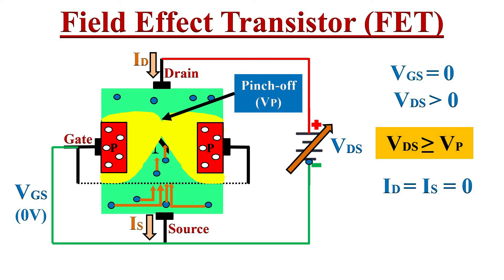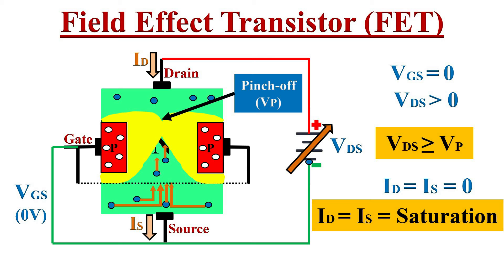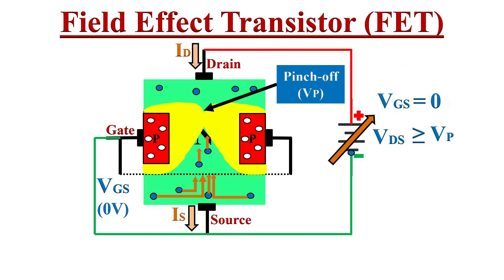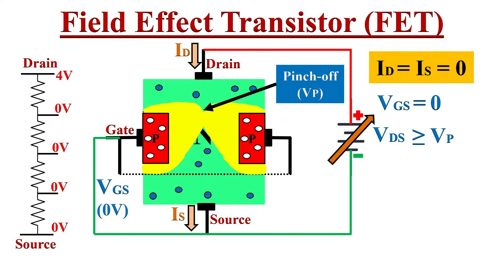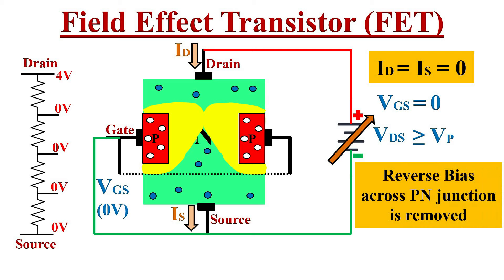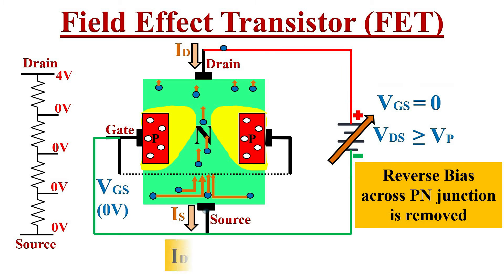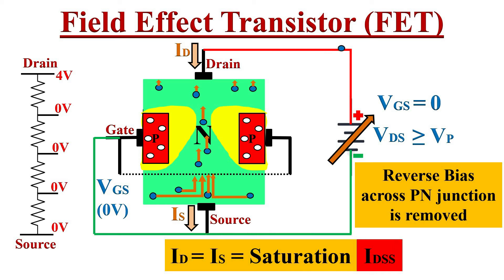In fact, once the pinch-off condition is reached, the currents ID and IS reach saturation level. Once pinch-off is reached, if current drops to zero, there would be no different potential levels across the channel, and the reverse bias across the PN junction would remove, decreasing the depletion region and causing current to start flowing again. So basically, the current ID will not become zero — at the pinch-off condition, the current ID reaches maximum or saturation.